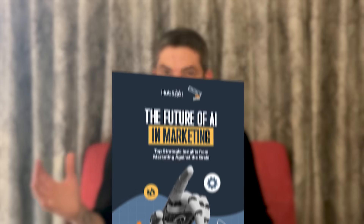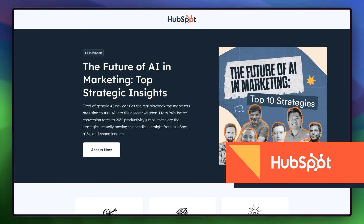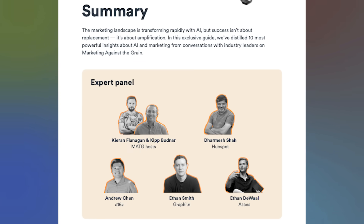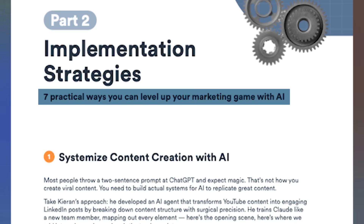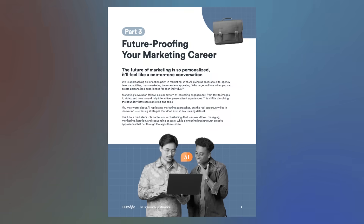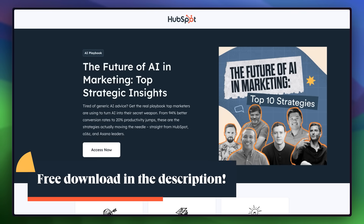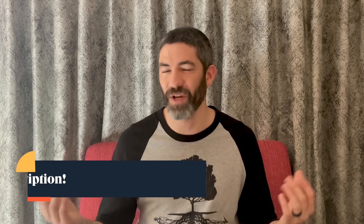AI is the future of many industries, but one it's already making a major impact in is marketing. In the description I have a free PDF provided by HubSpot that covers AI marketing strategies straight from leaders at HubSpot, A16Z, and Asana. It covers seven proven strategies for implementing AI across your marketing operations and how to future-proof your career with AI. Instead of wasting time figuring it out on your own, use their playbook with tested frameworks. It's a completely free download using the link in the description. Thank you to HubSpot for sponsoring this video.